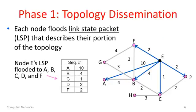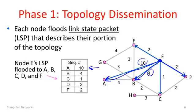Phase one is flooding to disseminate the topology. Each node floods a link state packet describing its portion of the topology. I've shown the link state packet for node E here. Node E's portion of the topology includes a link to A with cost 10, a link to B with cost 4, and connections to C, D, and F — all listed in this vector with appropriate costs. There's no connection to E itself since that's where we are. That is the link state packet that node E floods out, and every other node does similarly for its portion of the topology.